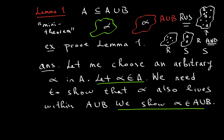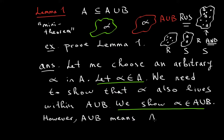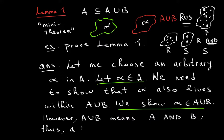In our proof, we said let alpha be an element of A. We need to show alpha is an element of A union B. So we explore what A union B means: A union B contains the elements of A and B. Therefore, alpha has to be an element of A union B.